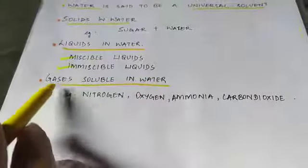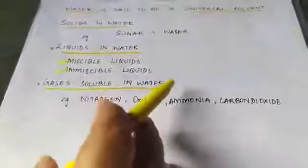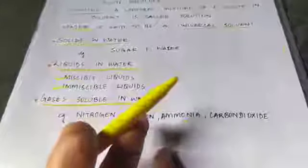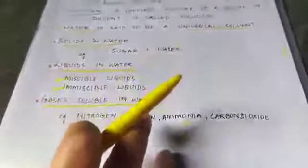Next, we will see gases soluble in water. Gases such as nitrogen, oxygen, ammonia, and carbon dioxide dissolve in water. Water in oceans, seas, rivers, and lakes contains dissolved oxygen and nitrogen. Aquatic animals like fishes breathe in oxygen from this dissolved gas in the water.